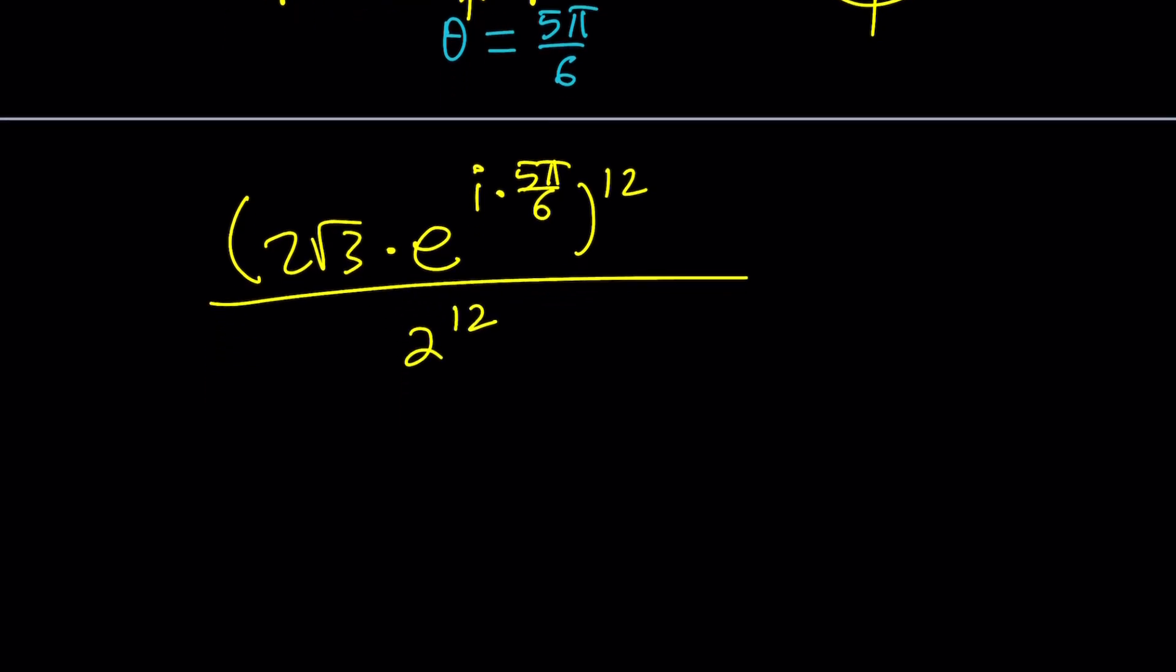Now, how do you raise something like this to the 12th power? You raise this to the 12th power, 2 root 3. And then this expression is going to be multiplied by 12. 6 goes into 12 2 times. And we end up with i times 10 pi. 10 pi is a multiple of 2 pi. So it's 2 pi i. e to the power of 2 pi i is just 1. That's unity. Awesome. Great.